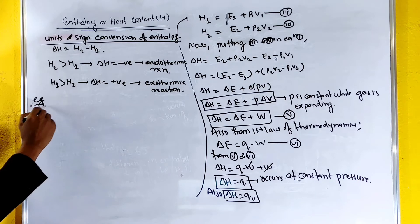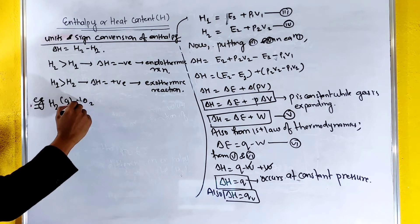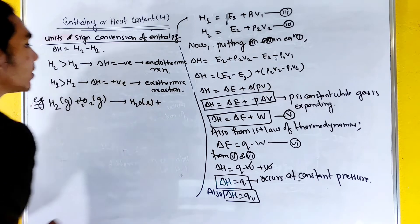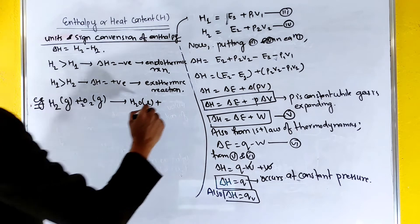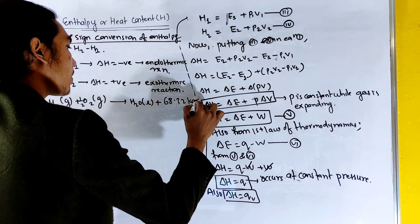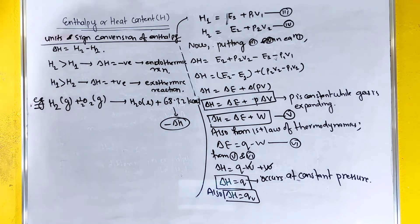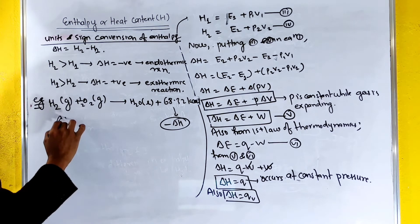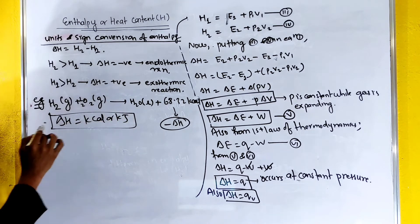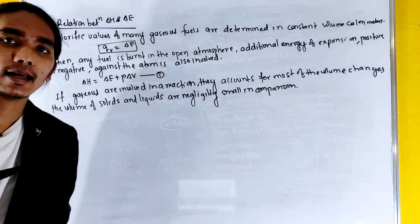For example: H₂ + ½O₂ → H₂O (liquid) + 68.32 kilocalories. Here, minus delta H is the change in enthalpy, so delta H equals negative 68.32 kcal. This is the unit of enthalpy change.